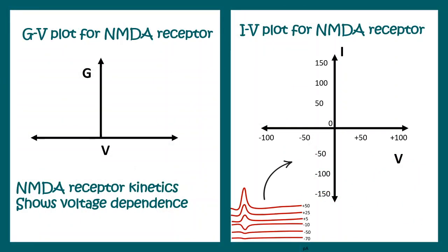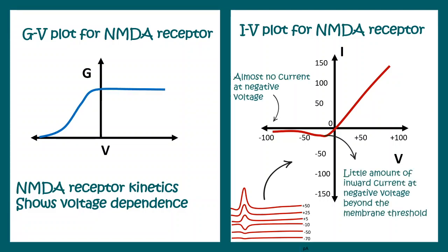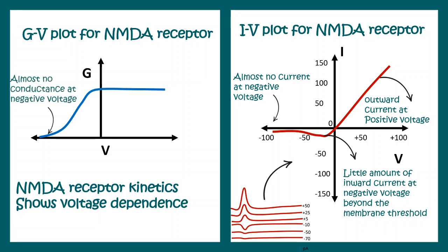We can plot an IV plot for the NMDA receptor as well. The IV plot shows voltage dependence: at low potential there is no current; between minus 50 and 0 millivolts there is some minuscule inward current; and outward current is present at positive voltages. Looking at the GV plot, there is voltage dependence in terms of conductance — almost no conductance at negative voltage, and some conductance at positive voltage, though the increase is not strictly linear with voltage.